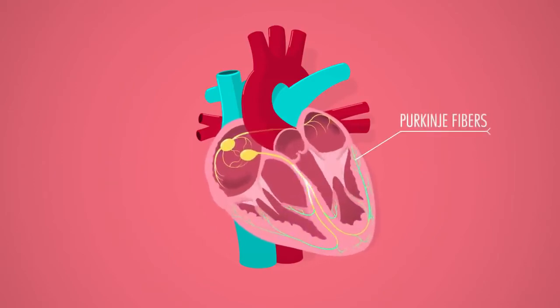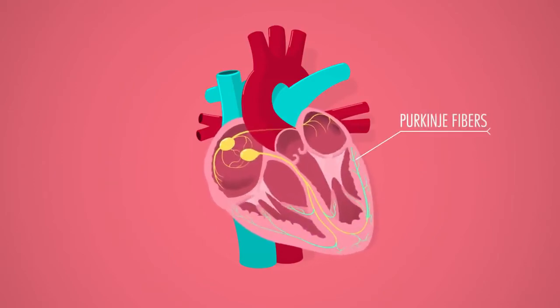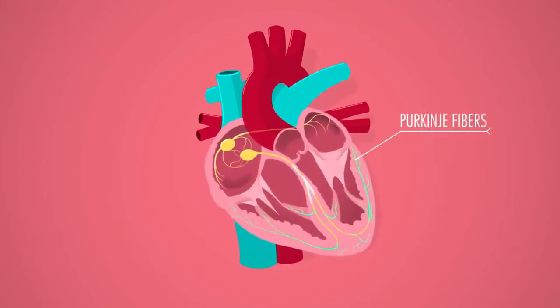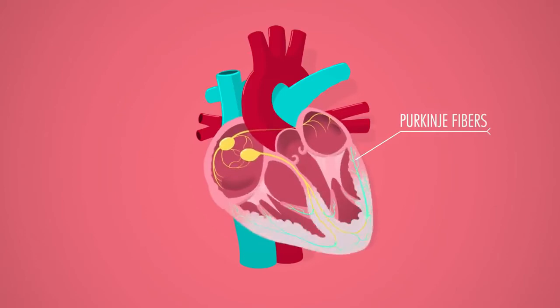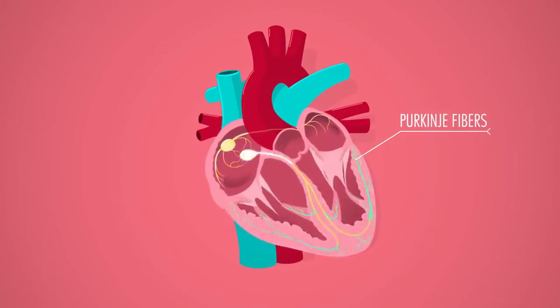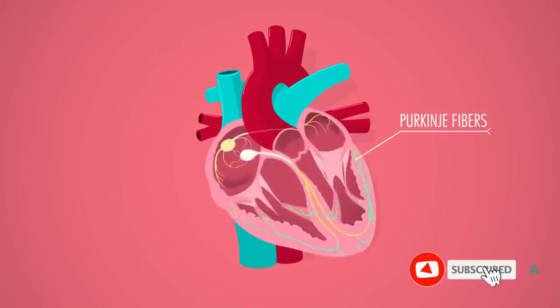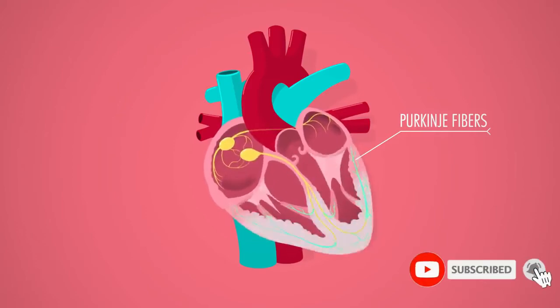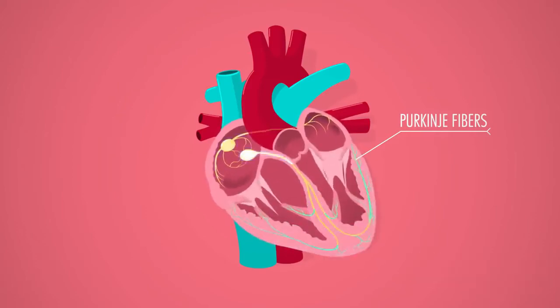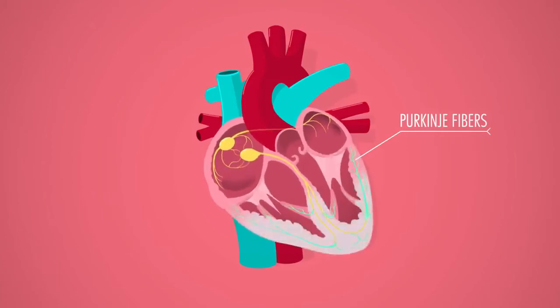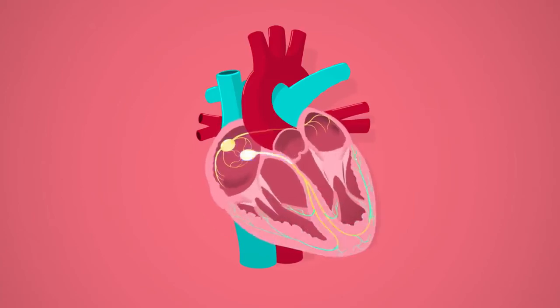Finally, the signal disperses out into Purkinje fibers, which trigger depolarization in all surrounding cells, causing the ventricles to contract from the bottom up like toothpaste tubes, at which point the whole cycle starts all over again.